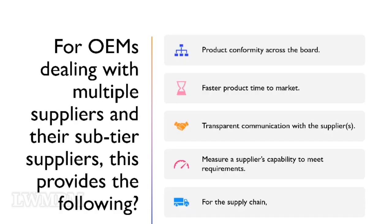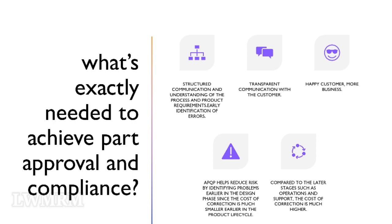For OEMs dealing with multiple suppliers and their sub-tier suppliers, this provides: product conformity across the board; faster product time to market; transparent communication with the suppliers; and the ability to measure a supplier's capability to meet requirements. For the supply chain, this outlines what's exactly needed to achieve part approval and compliance, structured communication and understanding of the process and product requirements, early identification of errors, transparent communication with the customer — happy customer, more business.